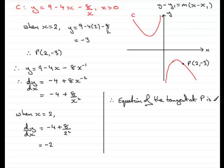okay, what is it? Well, it's going to be y minus y1. We know the y coordinate. It is minus 3. So that's y minus minus 3 equals m, the gradient, which we now know is minus 2. So minus 2, bracket, and then we've got x minus x1. So that's x minus the x coordinate at P, which is 2.